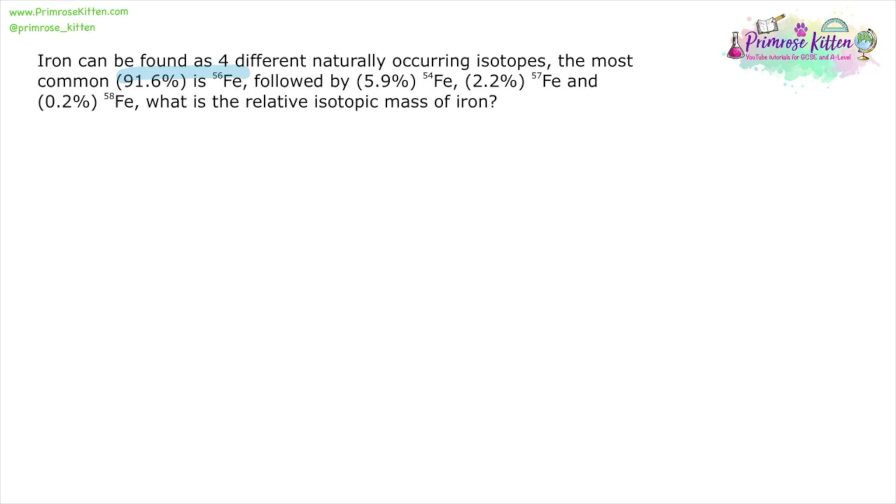Iron can be found as four naturally occurring isotopes. The most common, iron-56 at 91.6%, followed by iron-54, iron-57, and iron-58. What is the relative isotope mass of iron?